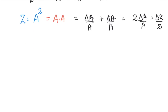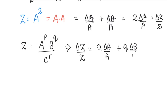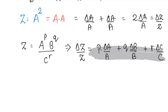So for the power form, suppose z = a^p · b^q · c^r, then δz/z = p·(δa/a) + q·(δb/b) + r·(δc/c). This is how to solve anything related to power for relative error.